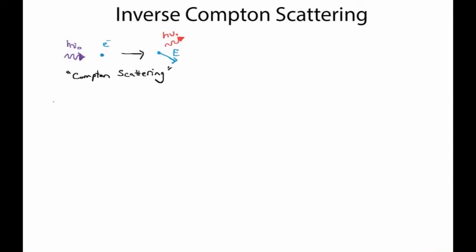In this video we're going to talk about inverse Compton scattering. Compton scattering is a general picture for an electron scattering a photon. On the left side we have a picture of a high energy photon coming in striking an electron and transferring some energy into that electron, so it moves off and the photon loses some energy as a result. This is traditional Compton scattering, where a photon loses energy through a collision with an electron.